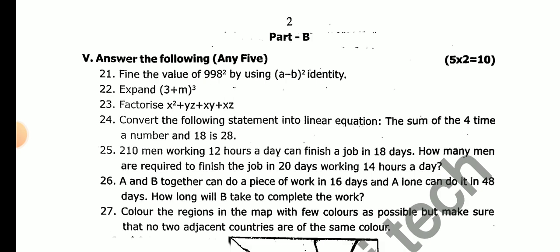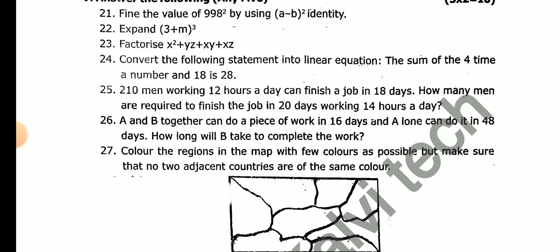5 into 10, any 5. Find the value of 998 square using (a-b)² identity. Factorize x²+yz+xy+xz. Convert the following statement into linear equation: The sum of the four times a number and 18 is 28.